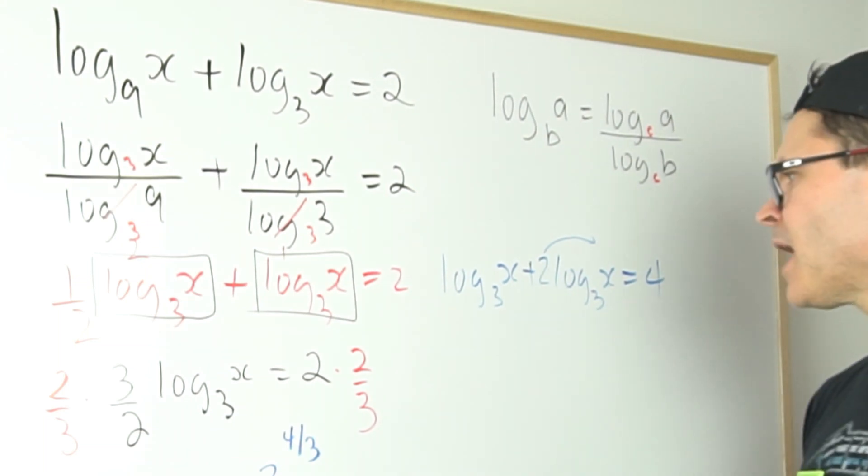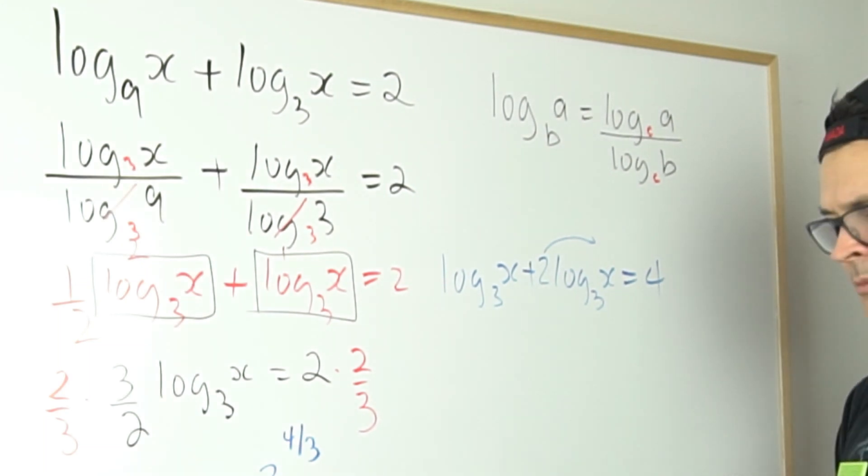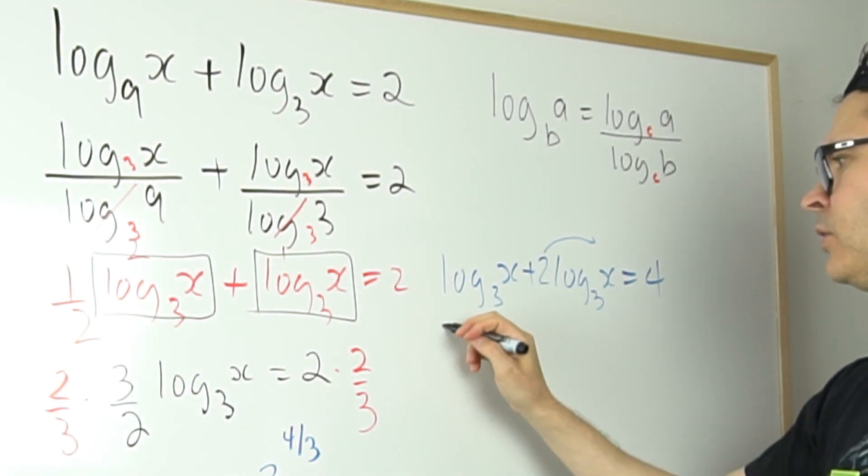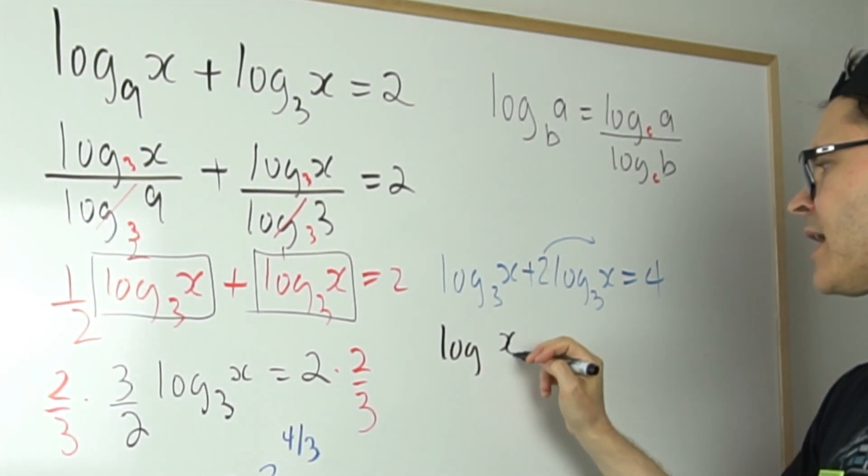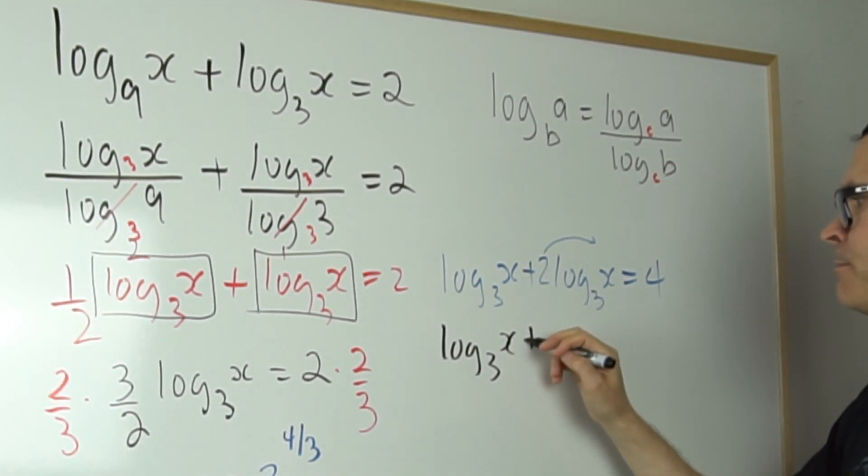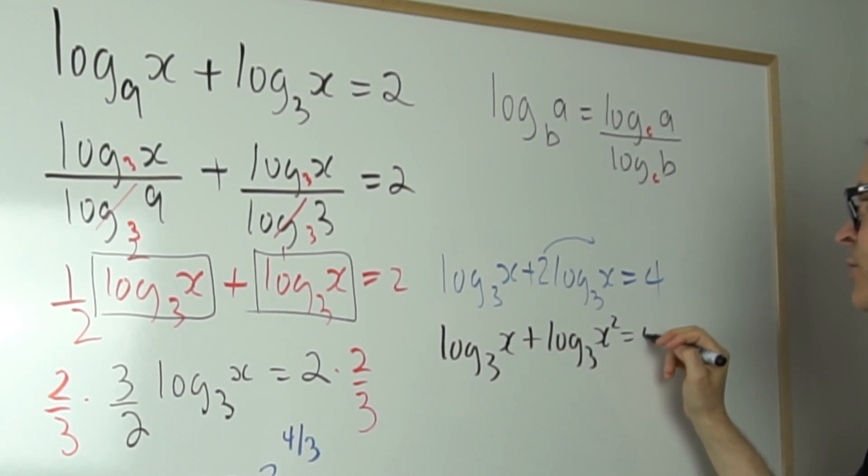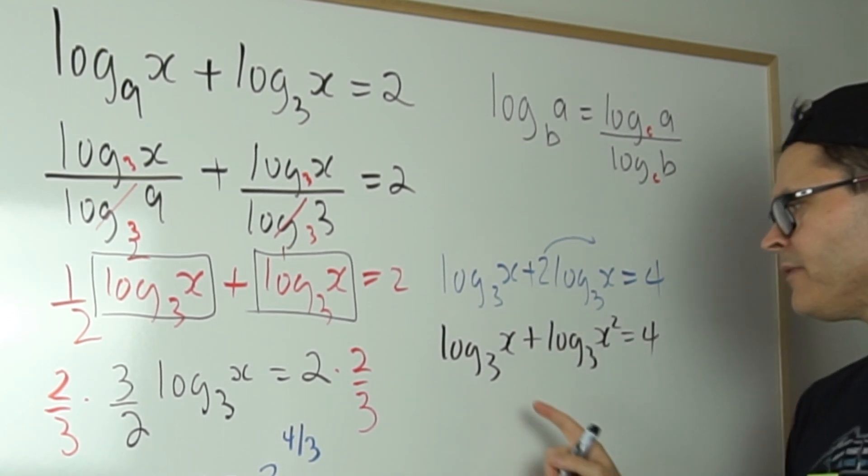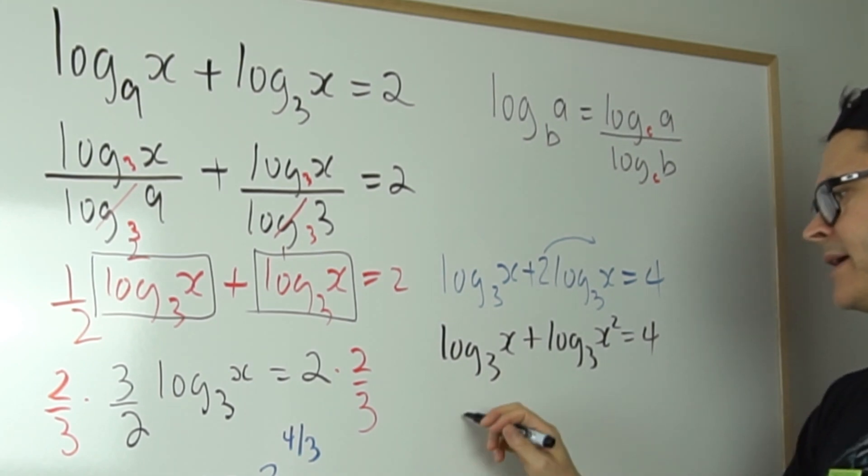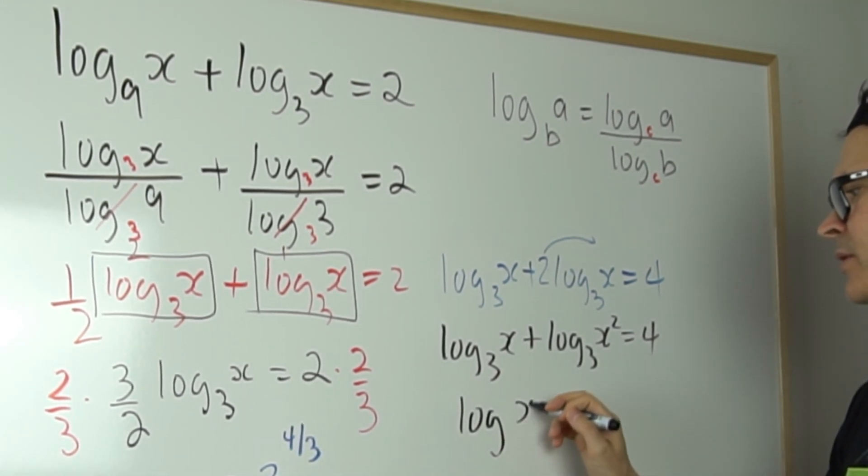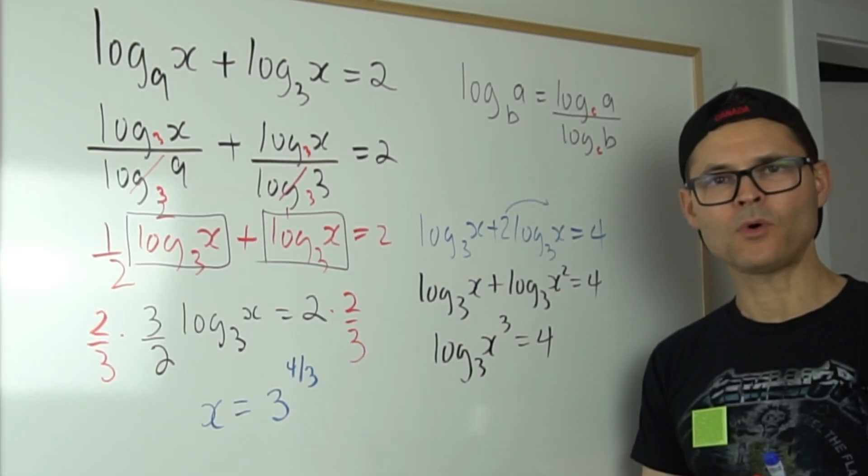And then you could bring this up. Do you see? You could use your power rule. And from there that would give me the log of x base three plus the log of x squared base 3 equals 4. And then I could use my product law by just combining that as a single log. That would be the log of x cubed base 3 equals 4.